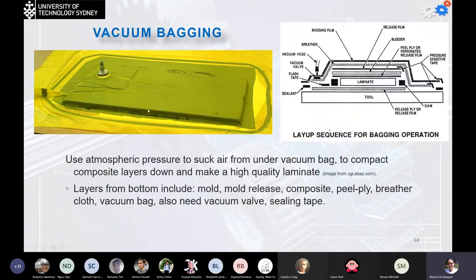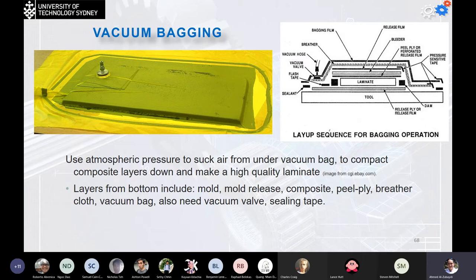Another process is vacuum bagging: layers are added over one another, then negative pressure is applied by vacuuming the bag. The atmospheric pressure compresses the layers to laminate them together into a high-quality laminate. The layers from bottom to top include the mold, mold release, composite, peel ply, breather cloth, vacuum bag, a vacuum valve at the top, and sealing tape on the sides to prevent any pressure escape.